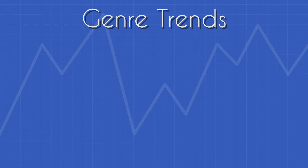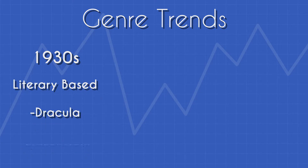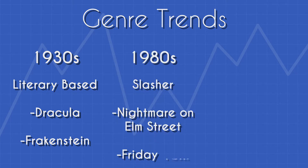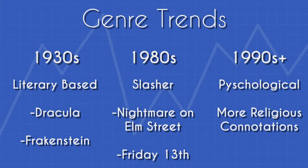Genres are always changing and always going through trends. An example of this would be horror films. Back in the 1930s you had horror films based on literature such as Dracula and Frankenstein. Jump forward to the 1980s and we have a popular trend of slasher films such as Nightmare on Elm Street and Friday the 13th. Moving into the 90s, there was a big rise of psychological horrors like The Blair Witch, and more recently these psychological horrors tend to have more religious connotations — paranormal stuff like The Conjuring and possession films.